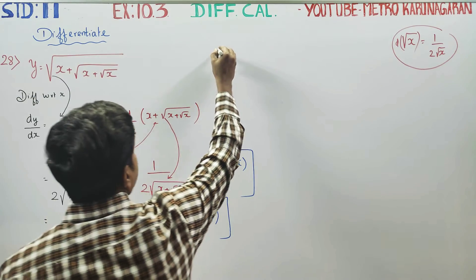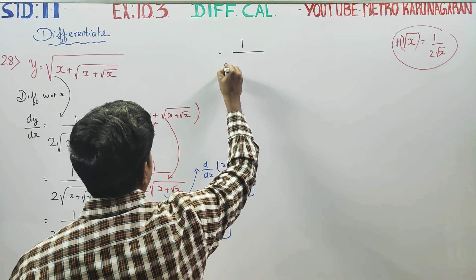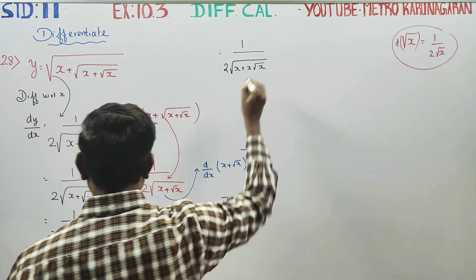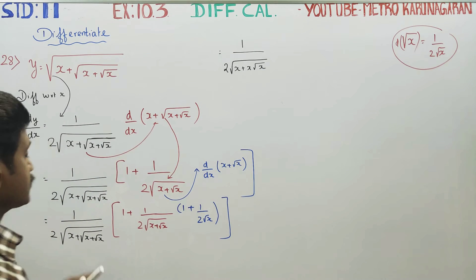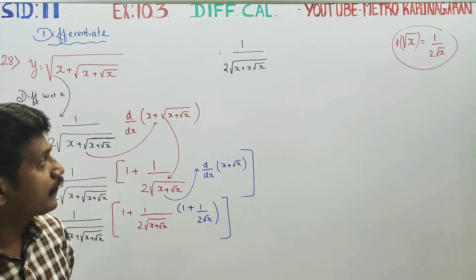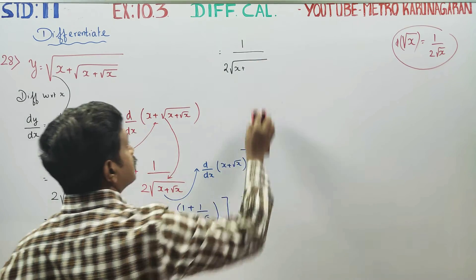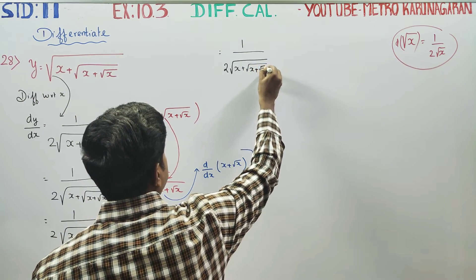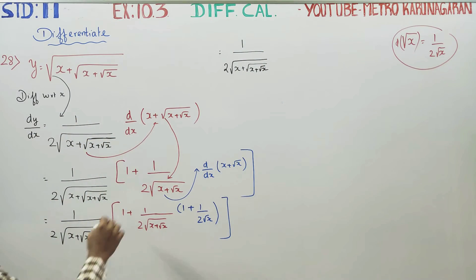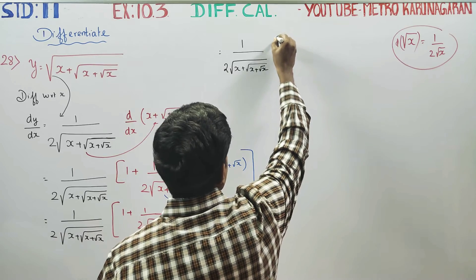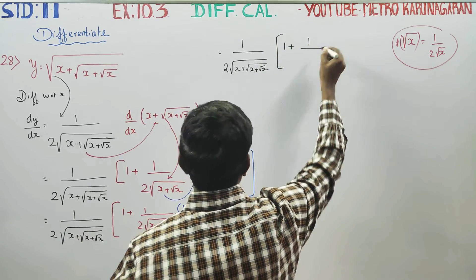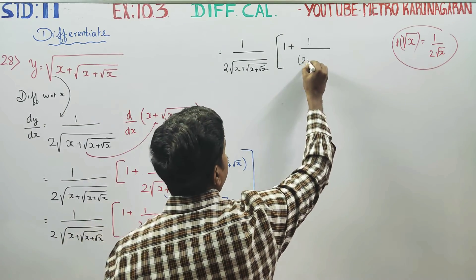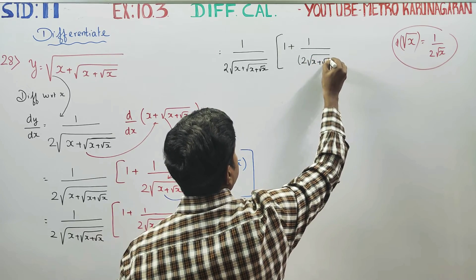Simplify: it is equal to 1 by 2 root of x plus root x, times x plus root x plus root x, times x plus root x plus root x. Next, number 1 plus denominator — the denominator is the whole bracket.